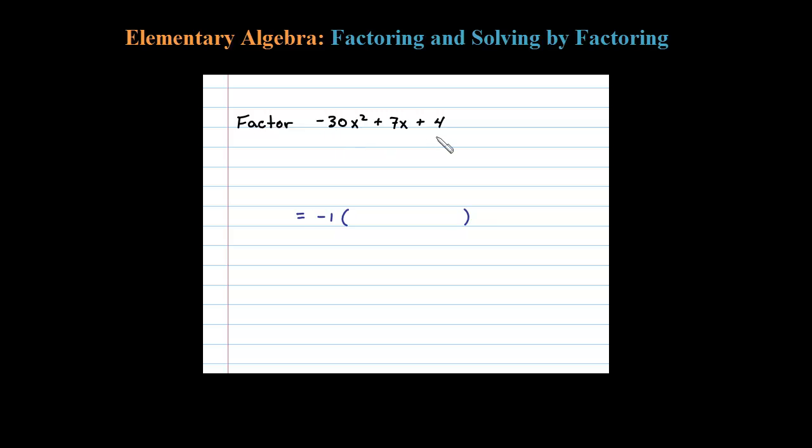Before I try to factor the trinomial, if you factor out a negative 1, you'll be left with 30x² - 7x - 4. Believe it or not, it'll be a little easier to factor this.